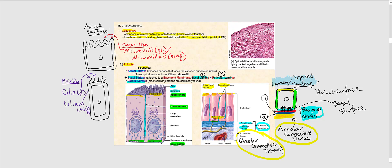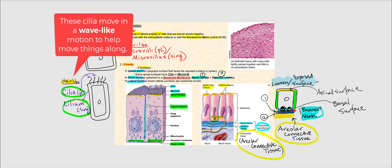Some apical surfaces of epithelial tissue can have cilia — hair-like extensions. Cilium is singular and cilia is plural. Cilia are present when the epithelial tissue needs to move things along. For example, in the respiratory tract, cilia help propel dust particles that land on the epithelial surface, moving them along.